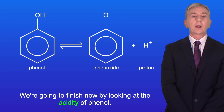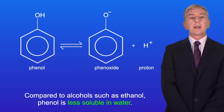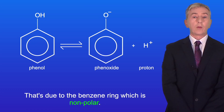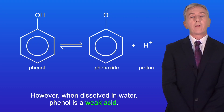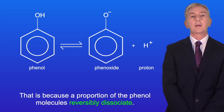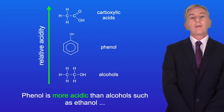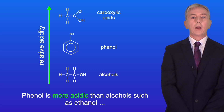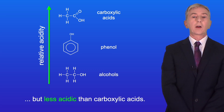We're going to finish by looking at the acidity of phenol. Compared to alcohols such as ethanol, phenol is less soluble in water due to the non-polar benzene ring. However, when dissolved in water, phenol is a weak acid because a proportion of phenol molecules reversibly dissociate. Phenol is more acidic than alcohols such as ethanol, but less acidic than carboxylic acids.